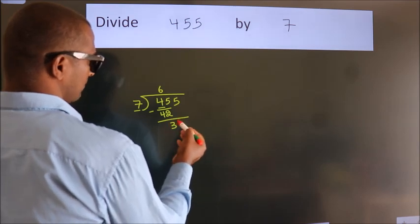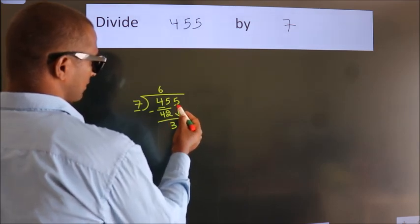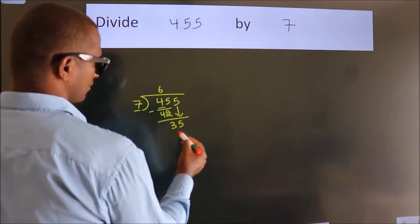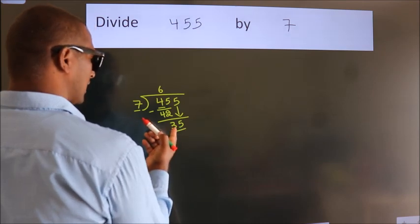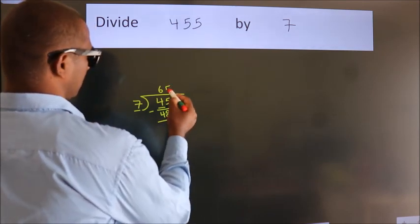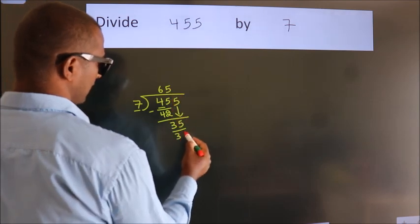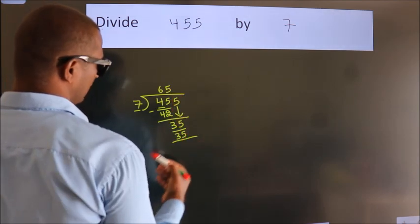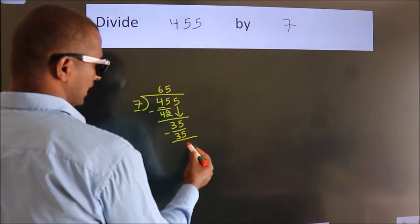After this, bring down the beside number. So 5 down. So 35. When do we get 35 in the 7 table? 7 fives, 35. Now we subtract. We get 0.